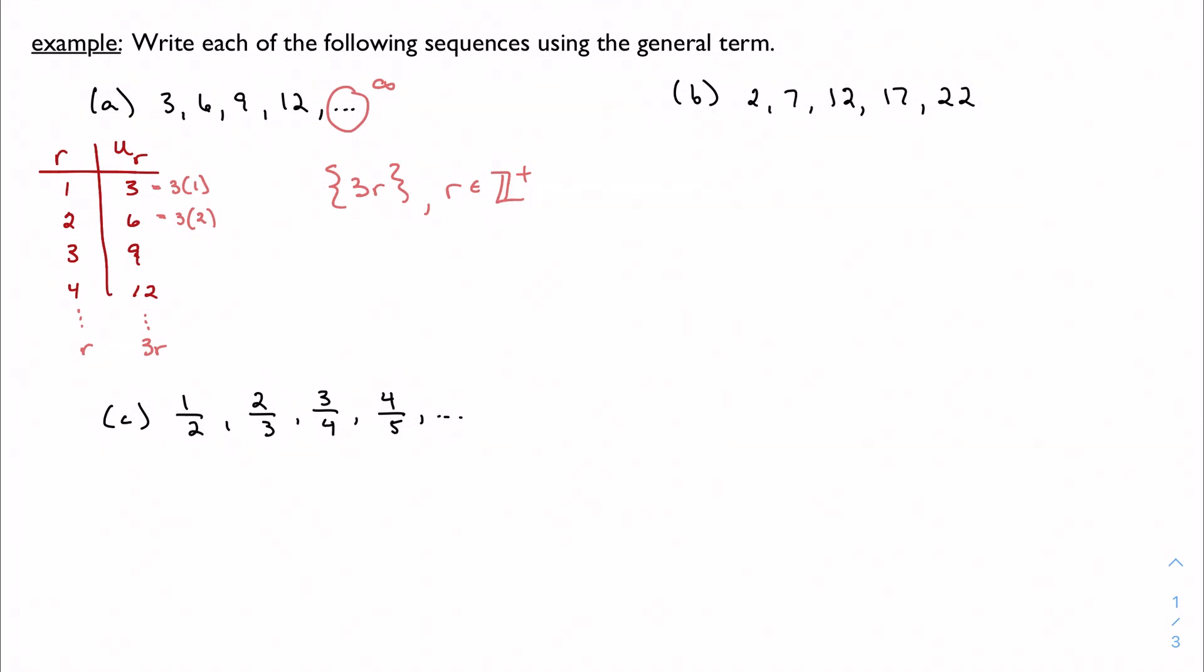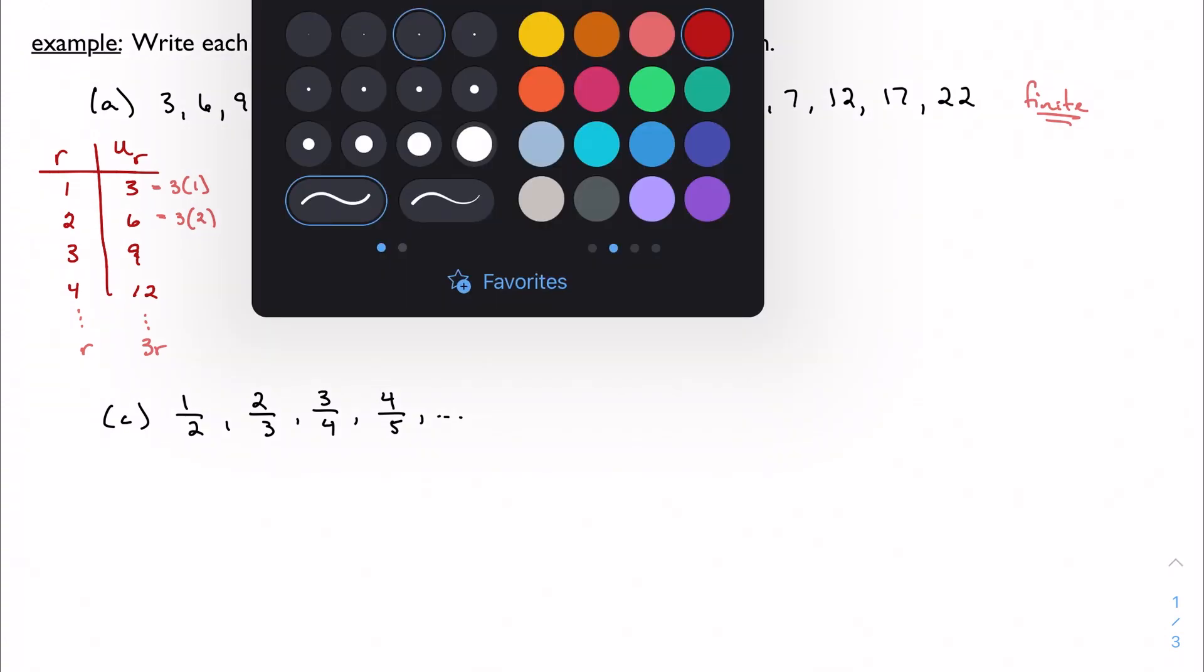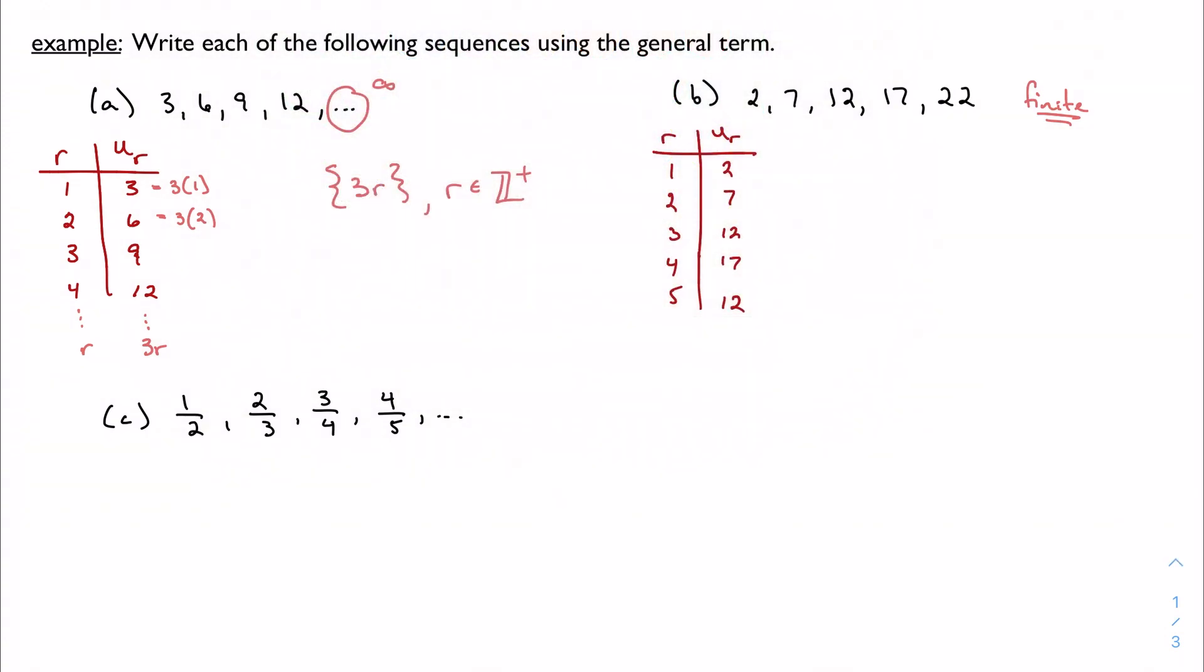In B, we notice that we have a finite sequence first of all. We'll come back to that later. And again, we want to come up with some kind of a rule. So let's make our chart again. I notice there are 5 terms. 2, 7, 12, 17, 22. Well there's no immediate connection that'll get us from 1 to 2, 2 to 7, 3 to 12, and so on. But maybe we notice that between each of these we're adding 5 every time we go from term to term.